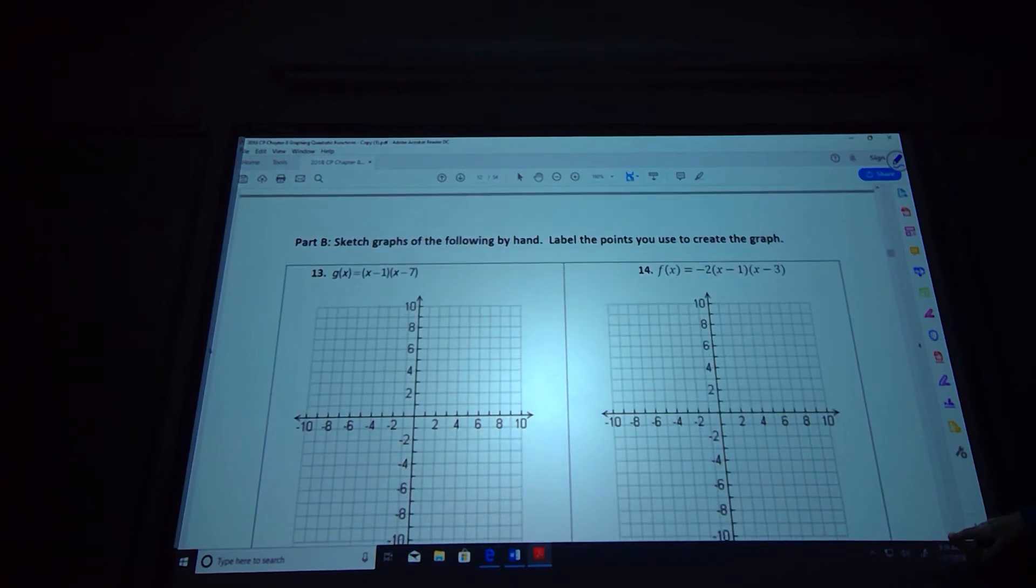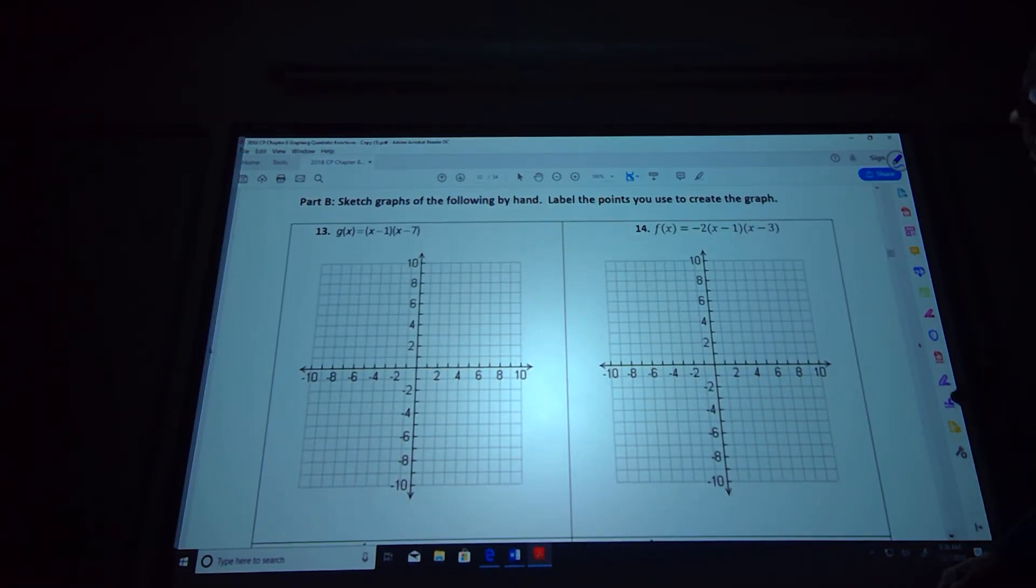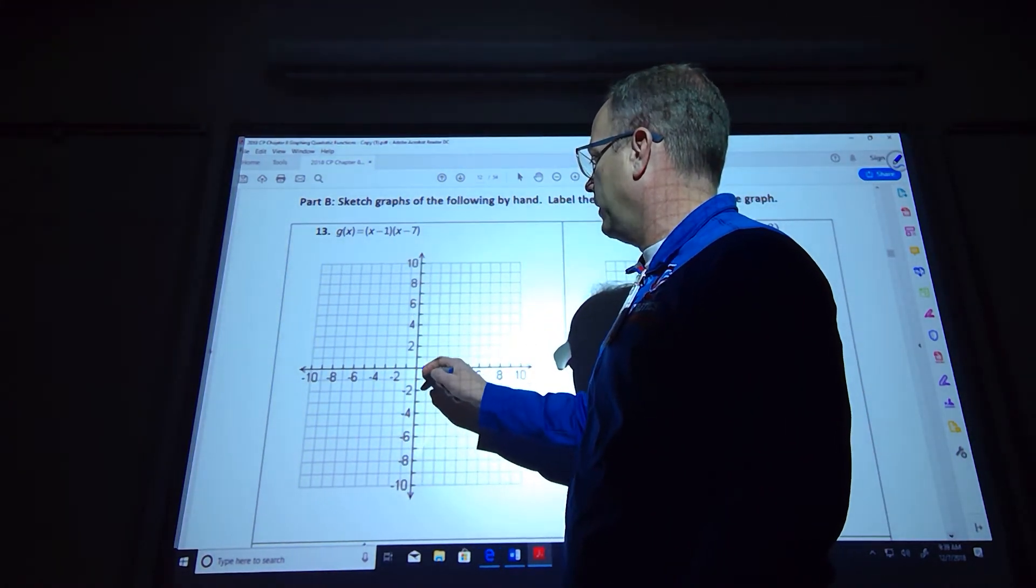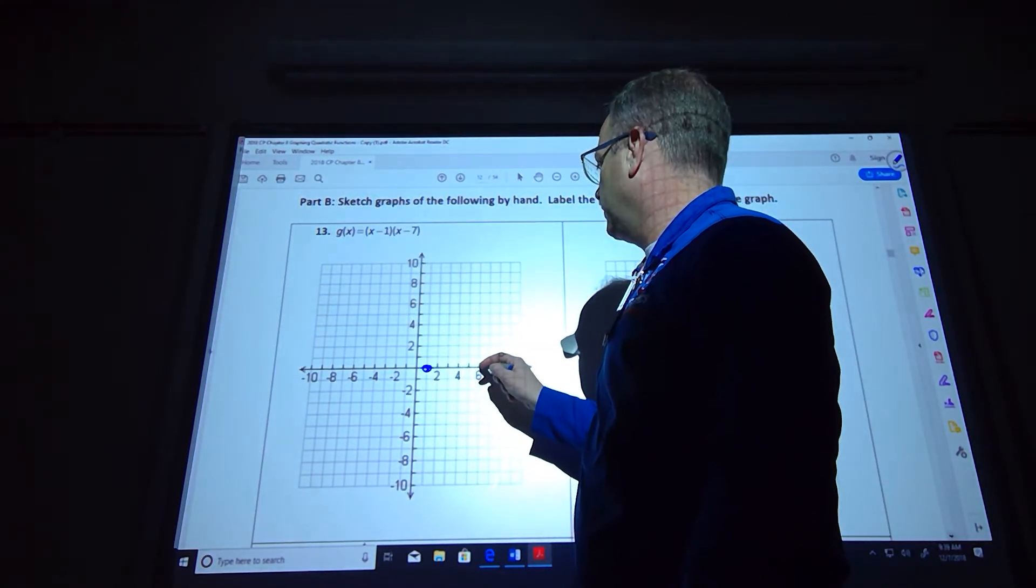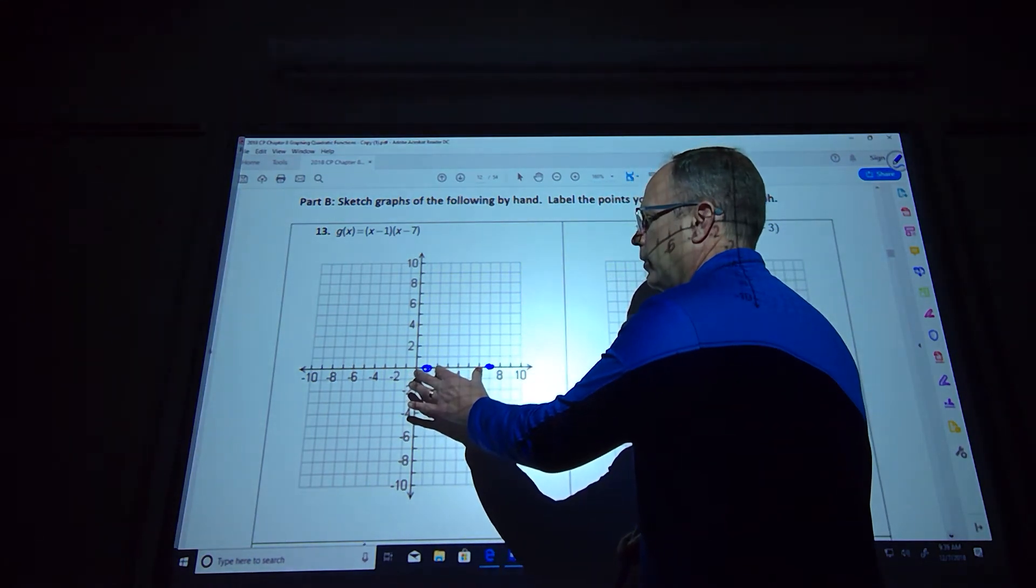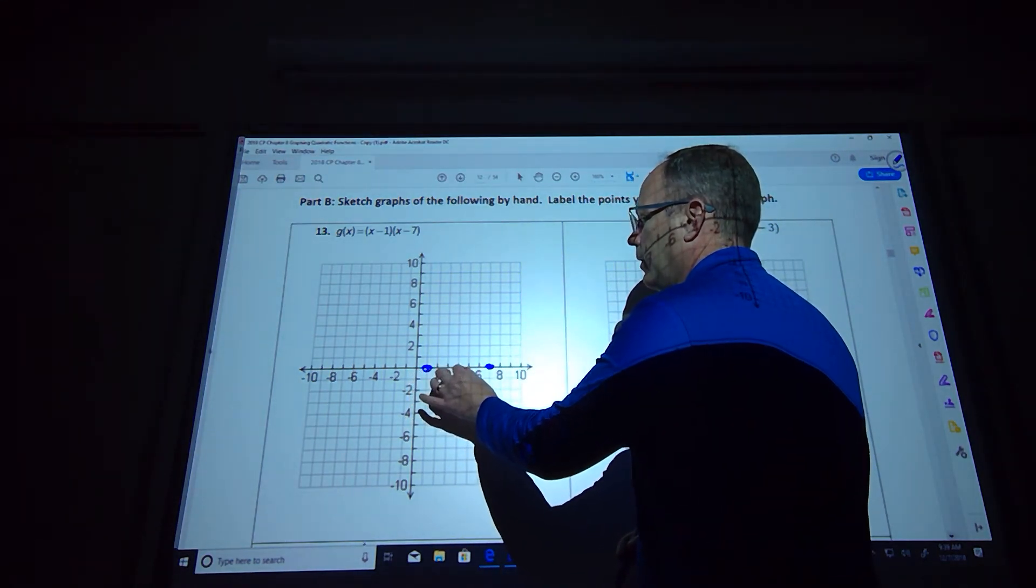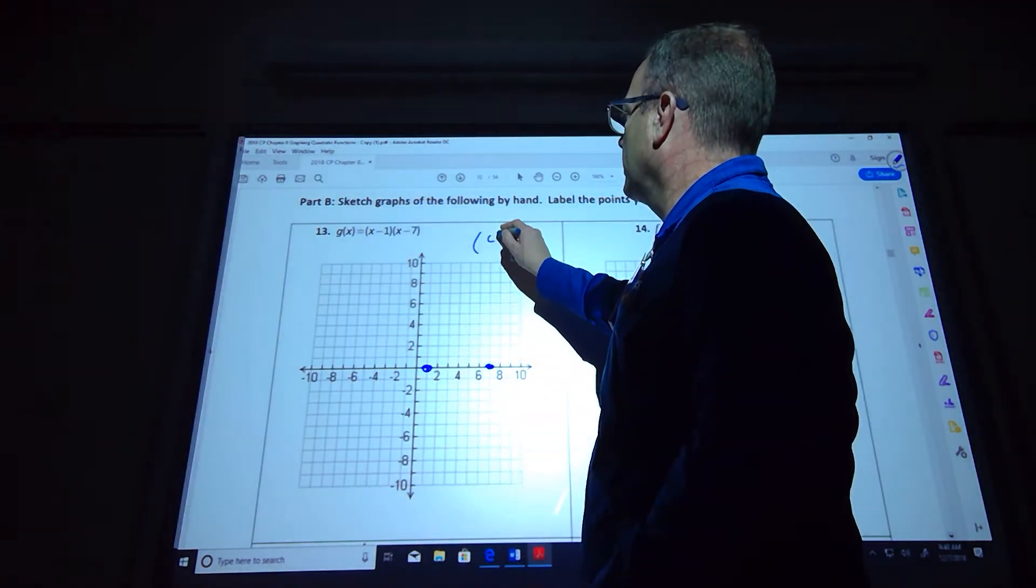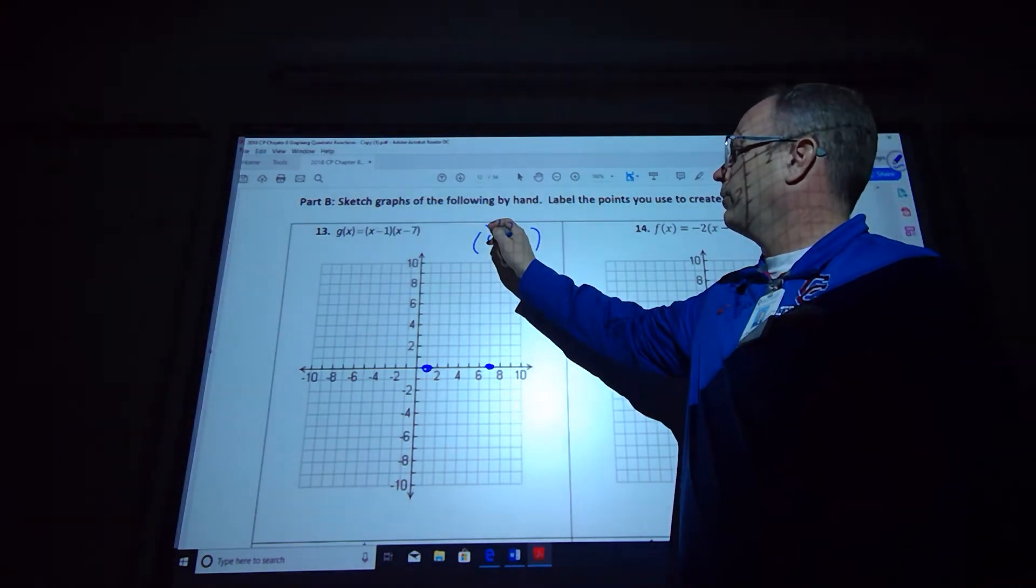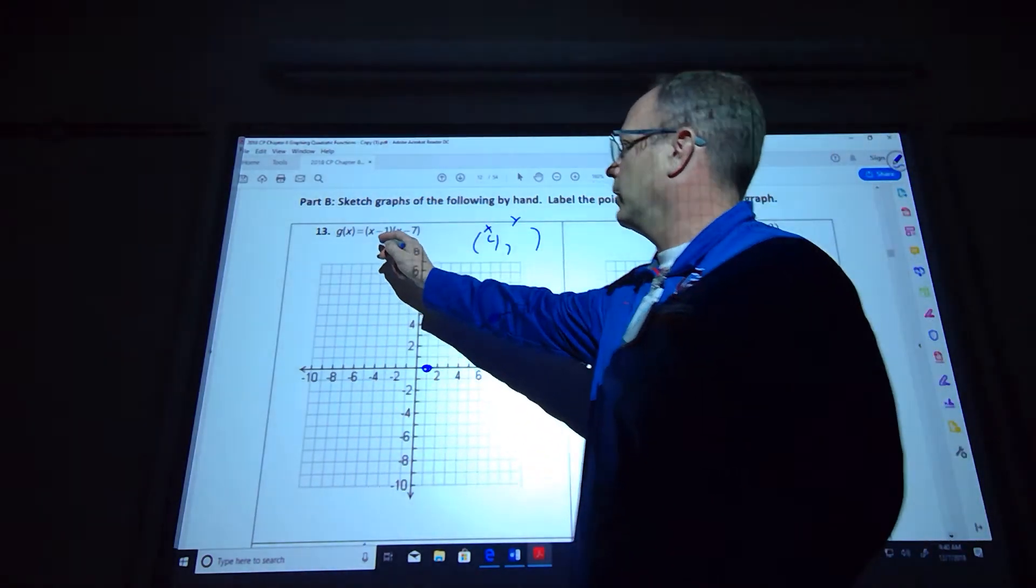Okay, so when it's given to you in factored form, that means we can solve where it crosses the x-axis. So that's going to be positive 1, which is right there, and that means positive 7, which is right there. And we're going to need to figure out what's halfway between those. So come in one, come in one. It looks like at 4 comma something we're going to have our vertex. Well, I need to plug 4 in, that's an x value, I need to plug it in to get my y value.